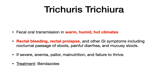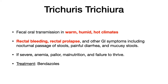Trichuris trichiura is transmitted fecal-orally, most often in warm, humid, hot climates. The two buzzwords are rectal bleeding and rectal prolapse — especially rectal prolapse in children. If your exam mentions rectal prolapse in the context of a nematode, the answer is Trichuris trichiura. Severe cases can cause anemia, pallor, malnutrition, and failure to thrive. Treatment is bendazoles.